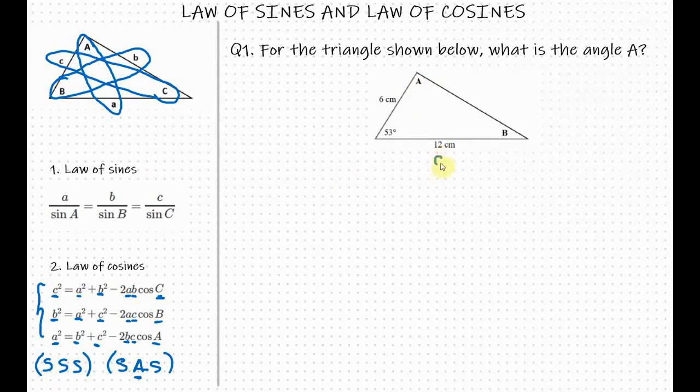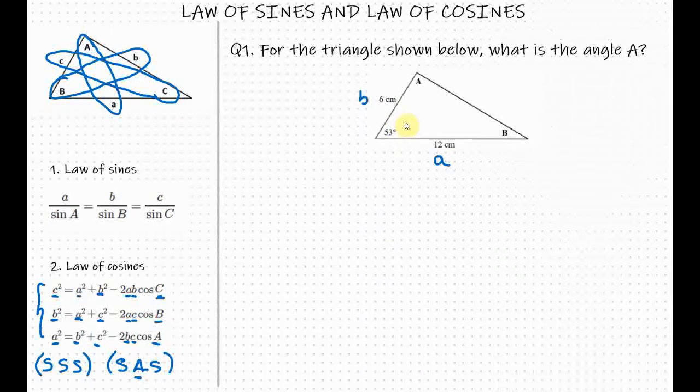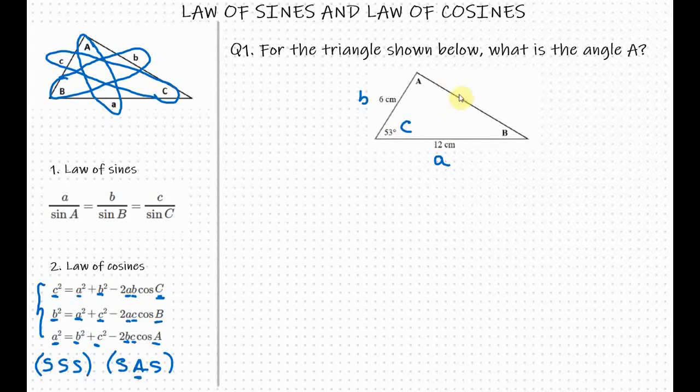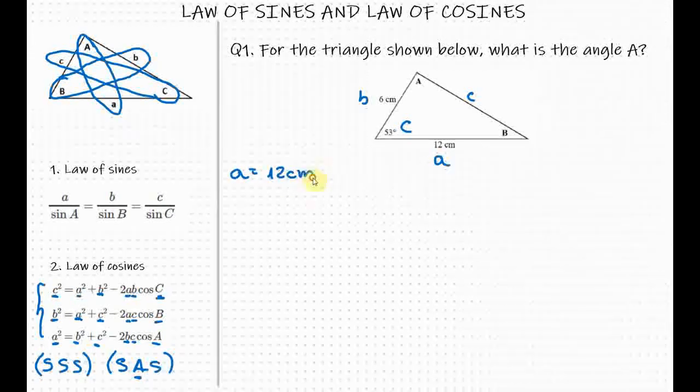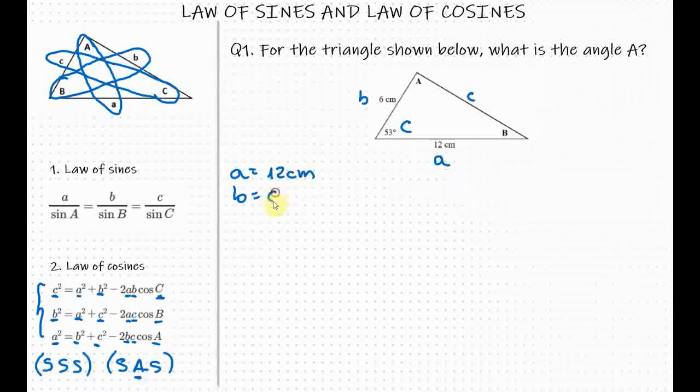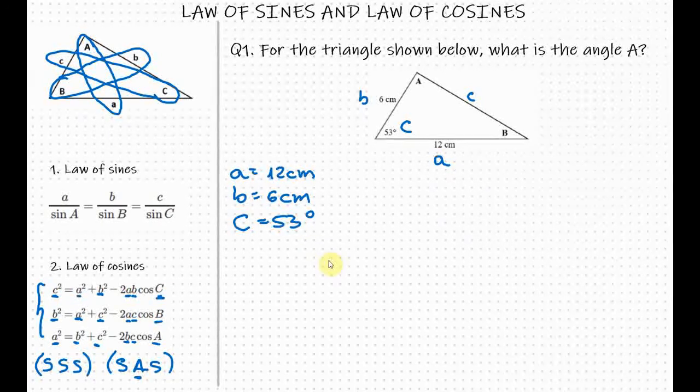So here we have a side a which equals to 12 cm, side b that equals to 6 cm and angle of 53 degrees, on which I will designate letter C. And that means that we have a side c here. Let me write the values first. So a equals to 12 cm, b equals to 6 cm and angle C of 53 degrees.